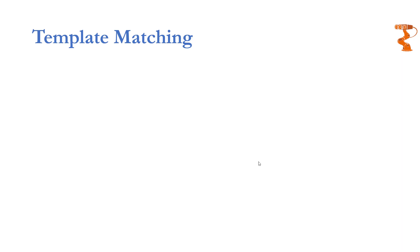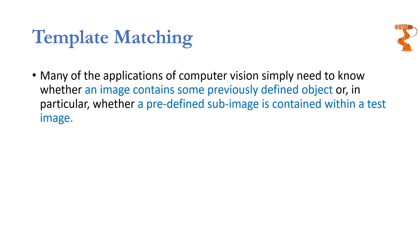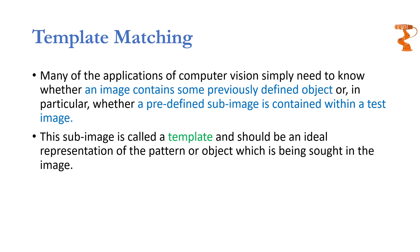In this part of the video I'm going to explain template matching, what are the different ways in which it can be used, and share some real life applications. There are many applications of computer vision or machine vision where you simply want to know whether a predefined object appears somewhere in a scene or not. This predefined object is called a template, and usually it is an ideal representation of something which may appear in an image.